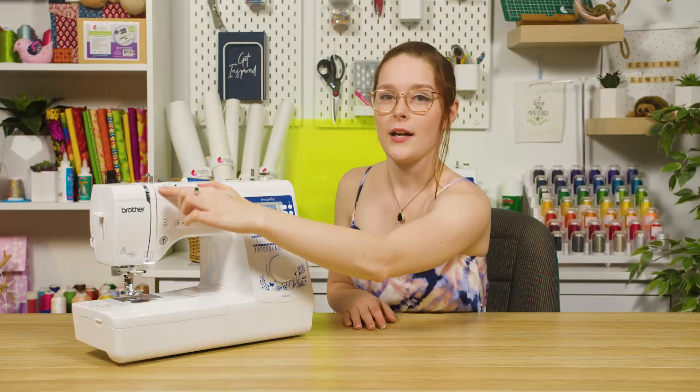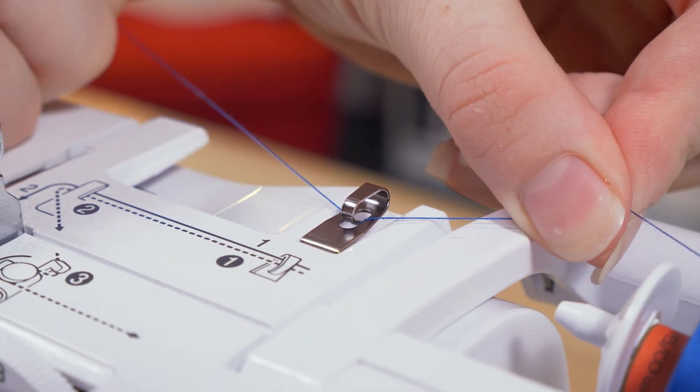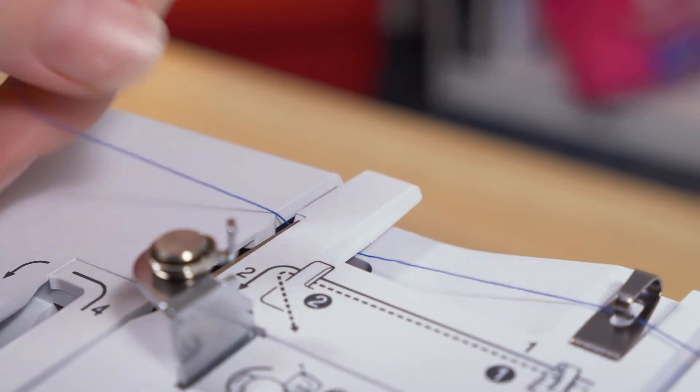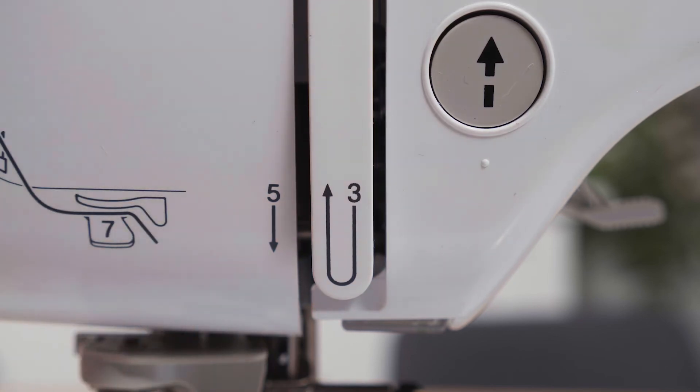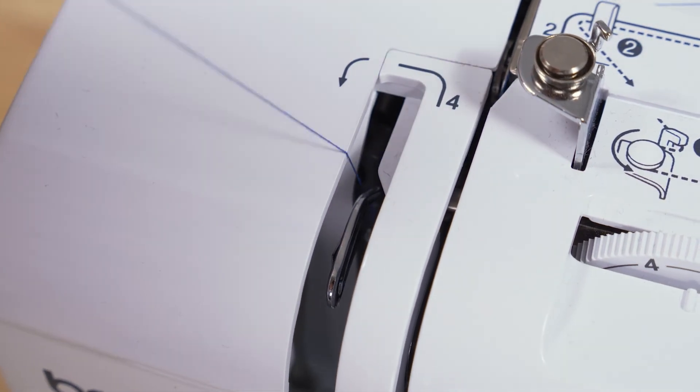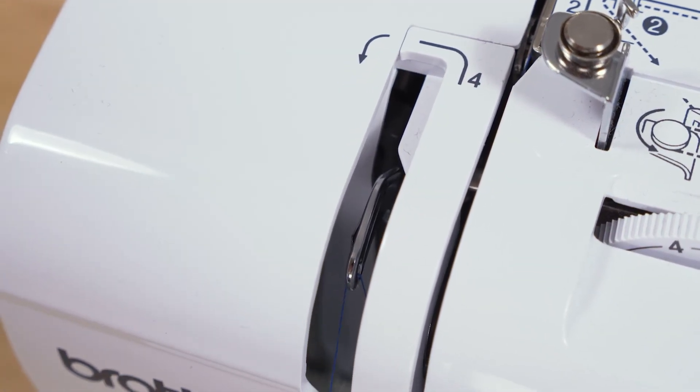You will see that the machine has numbers labeled at each step to guide you when threading. Simply follow the guide to successfully thread your machine. At step four, make sure that the thread is hooked into the take-up lever, otherwise your thread will get caught in the machine.